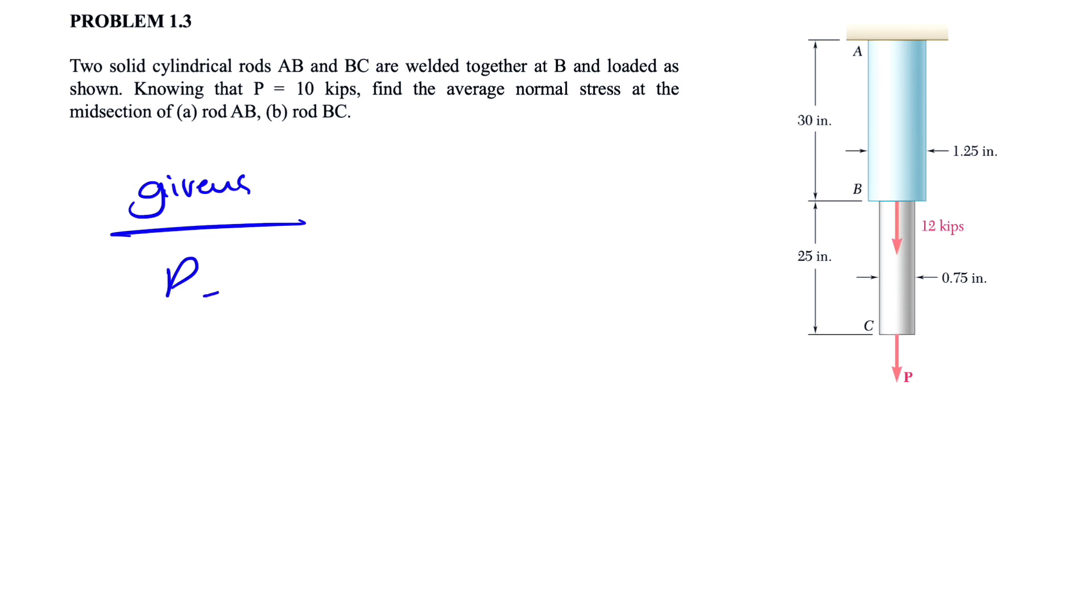So what we have is we know the force P is 10 kips, we have the diameter of the rod AB which we know is 1.25 inches and we have the BC, 0.75 inches and what we need to figure out is the average normal stress which we know our formula is force divided by the area of intersection.